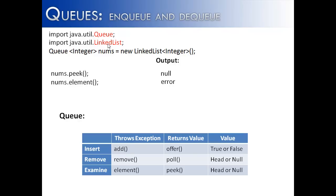Whereas offer, poll, or peek would not throw an error but tell you I couldn't add it on. Because there is no element left, I am going to return null. Or if there is no head, I am going to return null.